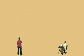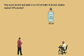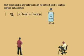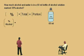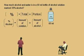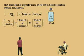Let's do one more — this is a mixture problem. How much alcohol and water is in a 60-milliliter bottle of alcohol solution marked 35% alcohol? Remember, solutions are two things: in this case, alcohol and water mixed together. There's a total of 60 milliliters — part of it is alcohol and part of it is water. So let's go back to our format: a percent times a total is a portion. Our percentage is the percent alcohol, our total is the amount of solution, and our portion is the amount of alcohol. Percent alcohol times the total solution gives us the amount of alcohol.